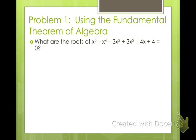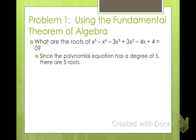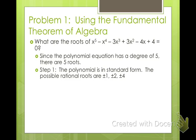So for this one, what are the roots of x to the 5th minus x to the 4th minus 3x cubed plus 3x squared minus 4x plus 4 equals 0? Well, based on the fundamental theorem of algebra, our largest power is the 5th power. That means we have 5 roots, so 5 solutions.